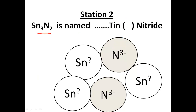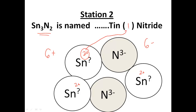For Sn3N2, traditionally you'd say 'tin nitride,' but tin has more than one charge so we need to find it. Nitrogen has a 3− charge, and there are two nitrogen atoms, so 3− plus 3− gives 6− total. I need 6 positives to balance that. The 6+ is distributed over three tin atoms, so each one has a 2+ charge. Therefore Sn3N2 is named tin(II) nitride.